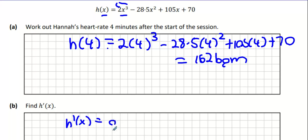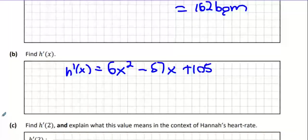Let's try this again. Bring 3 to the front, multiply by 2 and you get 6x. Take 1 away from the power, 6x squared. Multiply 2 by 28.5 and get 57 and take 1 away from the power. h'(x) is 6x squared minus 57x plus 105. That is h dash x done.